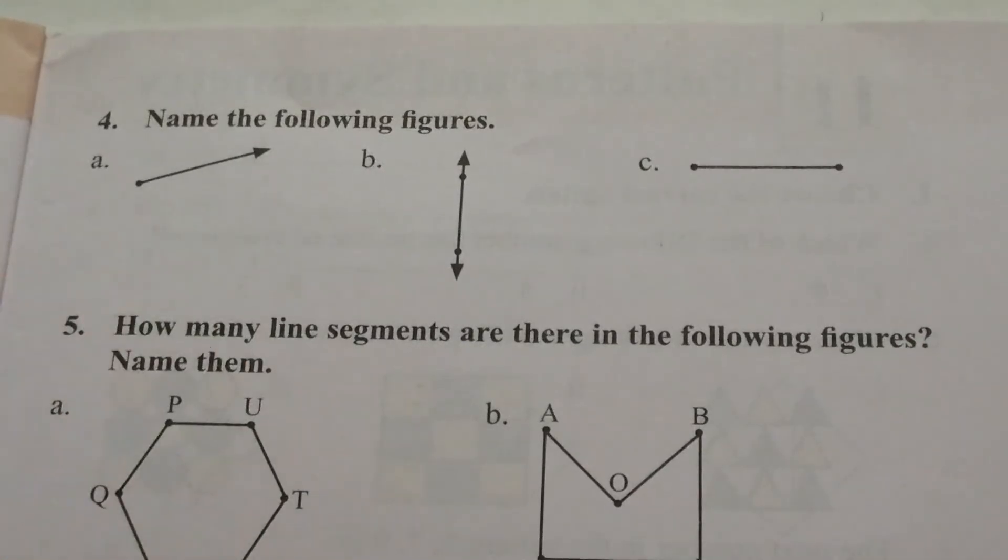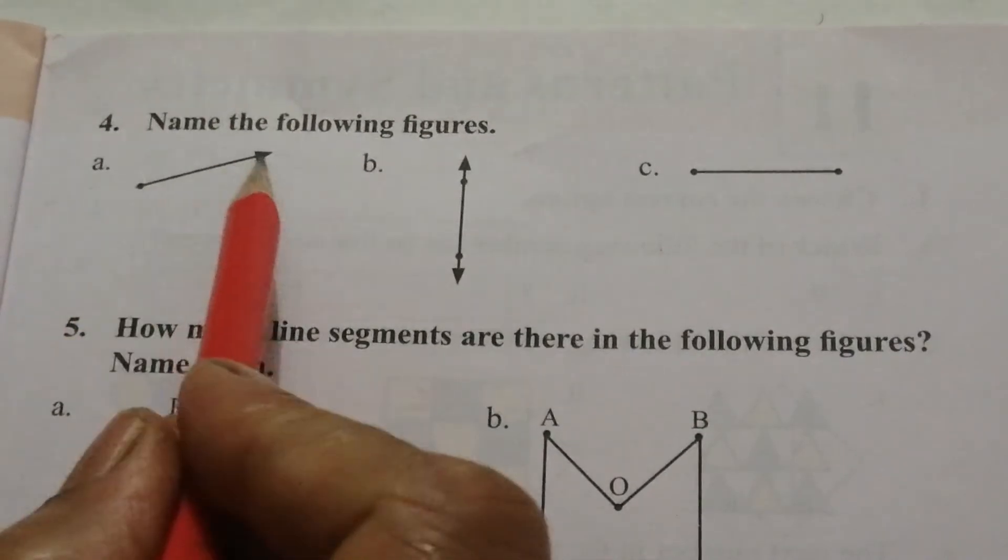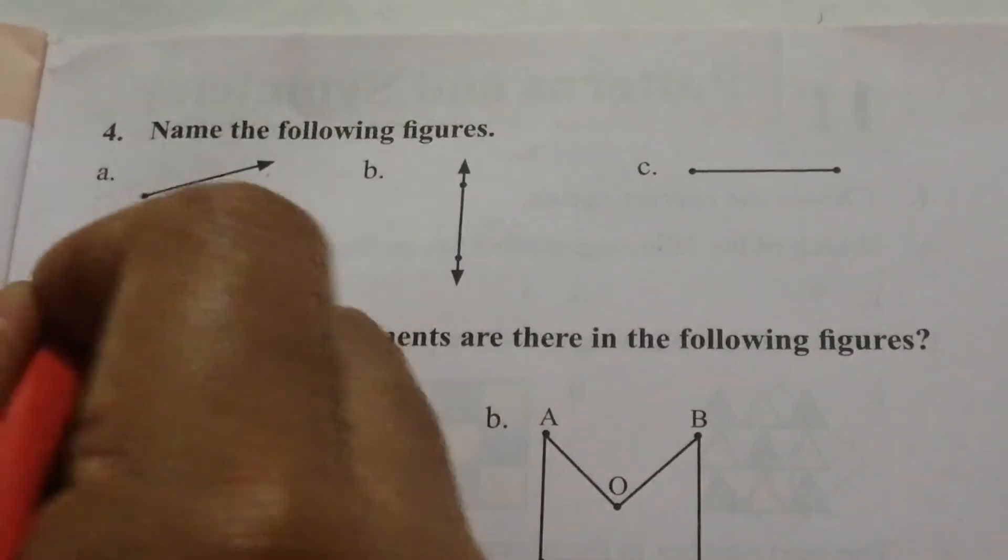4. Name the following figures. A. It has one fixed point and one arrowhead. So, it is a ray.